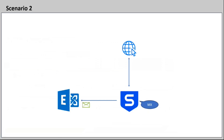If you are using a third-party email filtering server and the MX record is correctly pointing to it, but the email is still not getting delivered to Exchange Online, you need to check the message logs on the third-party email filtering server. In the message logs you will see whether the email was delivered to the server and, if so, why it is not being redirected to the Office 365 tenant.